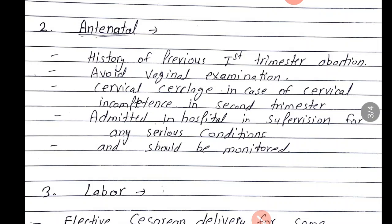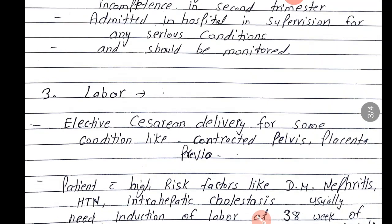During labor management of high risk pregnancy: Elective caesarean delivery for some conditions like contracted pelvis, placenta previa — aise koi complication hai to caesarean delivery ka plan karke rakhe pehle. Aur woh caesarean delivery ka plan hota hai 38 weeks of gestation pe.